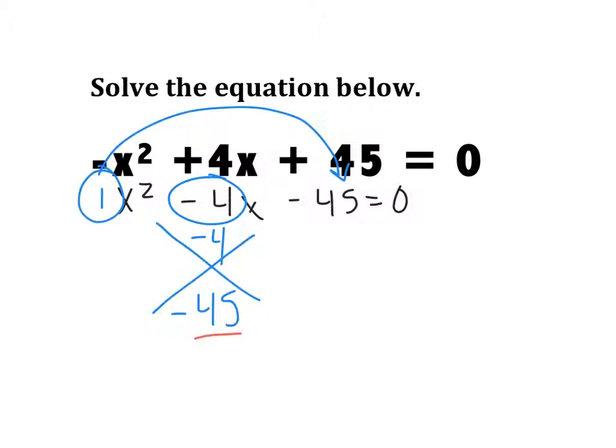Again, I want you to look for numbers that multiply to be negative 45. I'll put an M for multiply, A for add, here. So, up in the corner, what multiplies to be 45. I've got 1 and 45. 3 and 15. 15 minus 3, that doesn't work. I've got 9 and 5. 9 and 5, look at that. 9 minus 5 is 4.